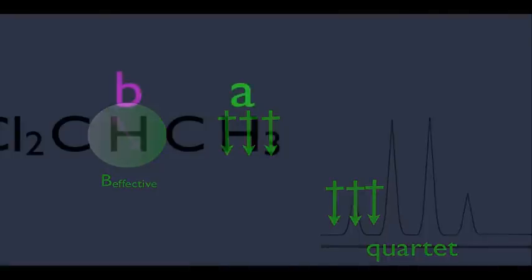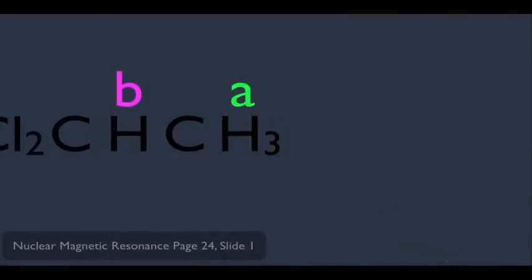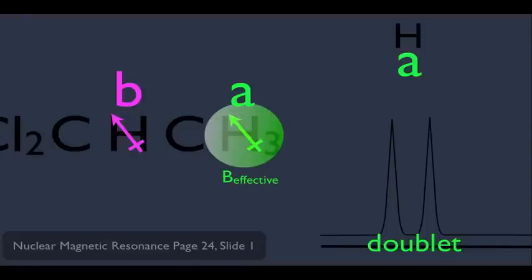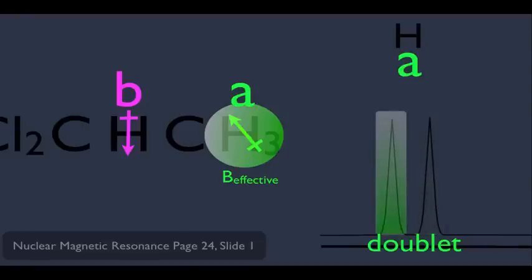We can apply the same logic to the A hydrogen's doublet. The A hydrogen's magnetic environment is influenced by the single B hydrogen. Since there's only one B hydrogen, there are only two possible magnetic environments. The B hydrogen can orient itself up, giving rise to one peak, or down, giving rise to the other. Both are equally likely, so both situations have a one to one ratio — which means the doublet peaks are the same height.